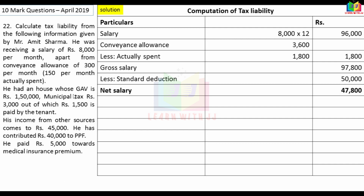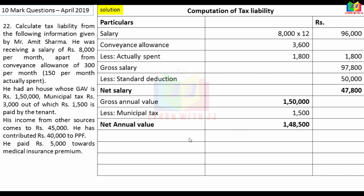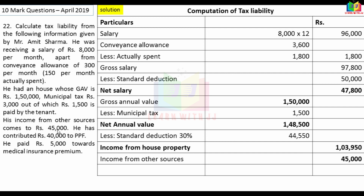House property: GAV Rs.1,50,000. Municipal tax Rs.1,500 paid by owner. Net annual value: Rs.1,48,500. Standard deduction at 30%: Rs.44,550. Income from house property: Rs.1,03,950. Income from other sources: Rs.45,000. Gross total income: Rs.47,800 plus Rs.1,03,950 plus Rs.45,000 = Rs.1,96,750.